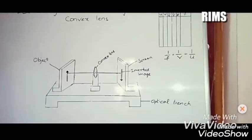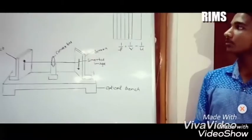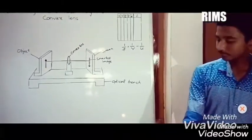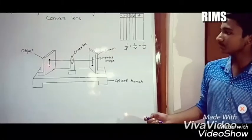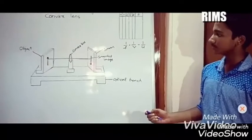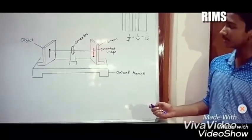Hi friends, now we are here to explain how to determine the focal length of a convex lens. Here is a diagram: this is the object, this is the convex lens, this is the screen. You can observe the inverted image and this is the optical bench.